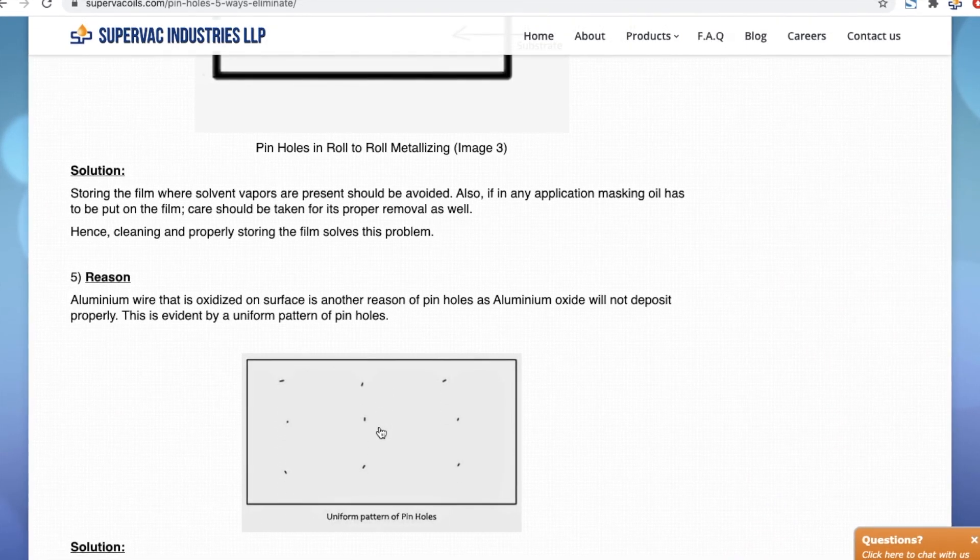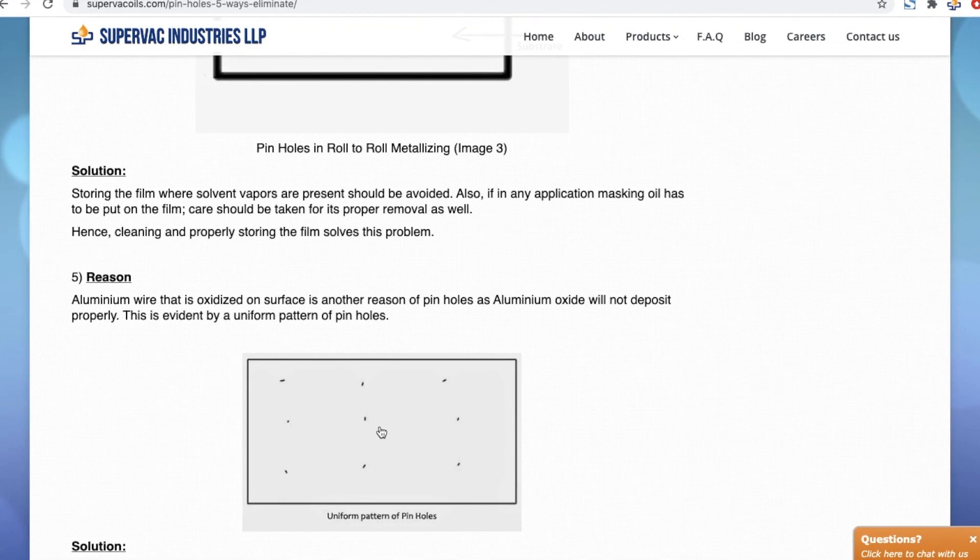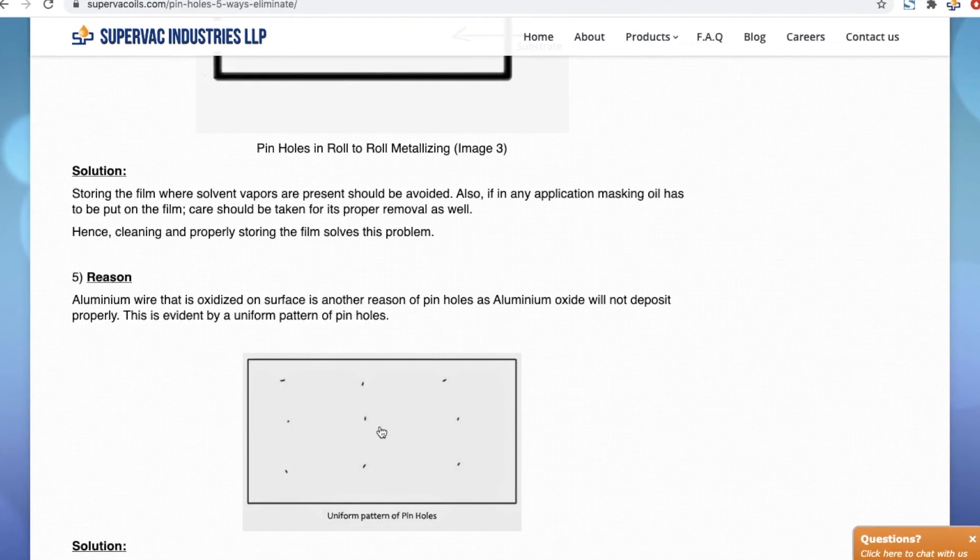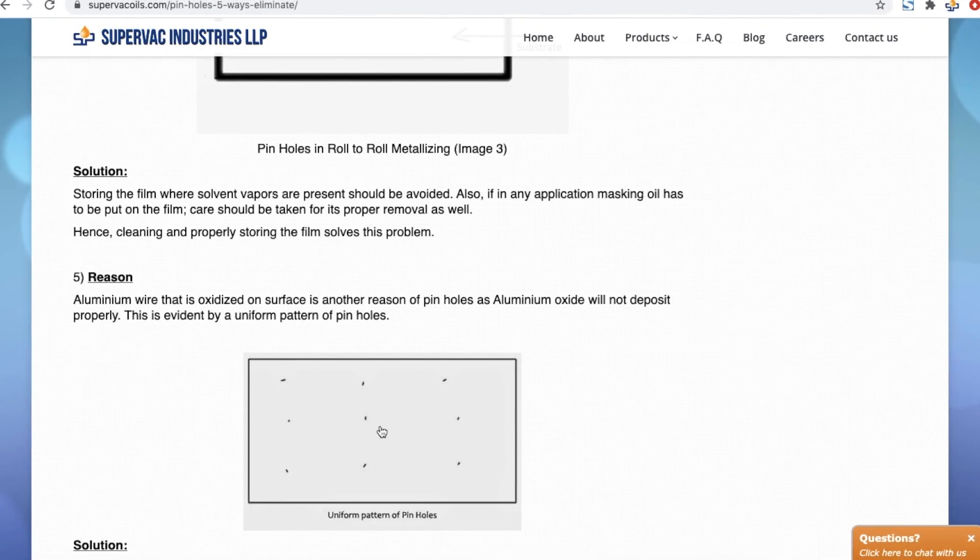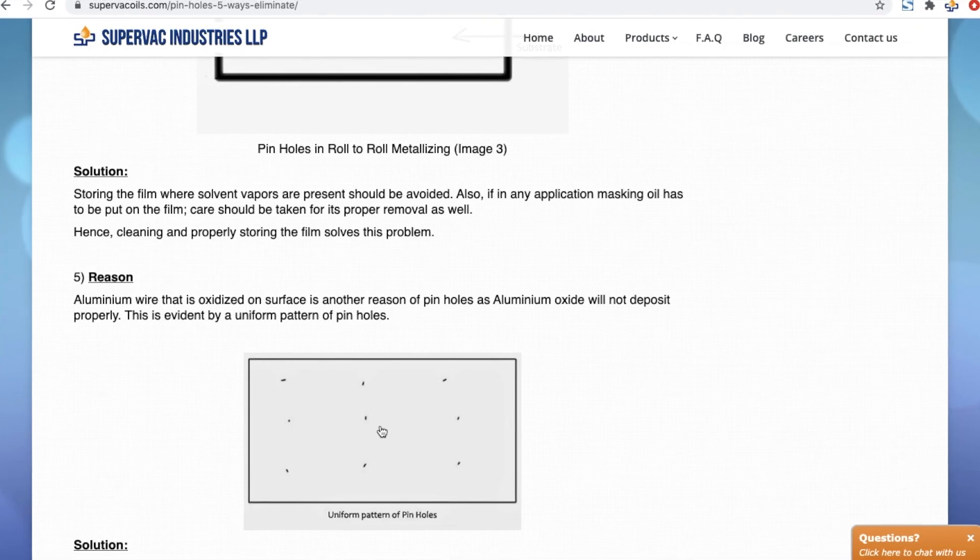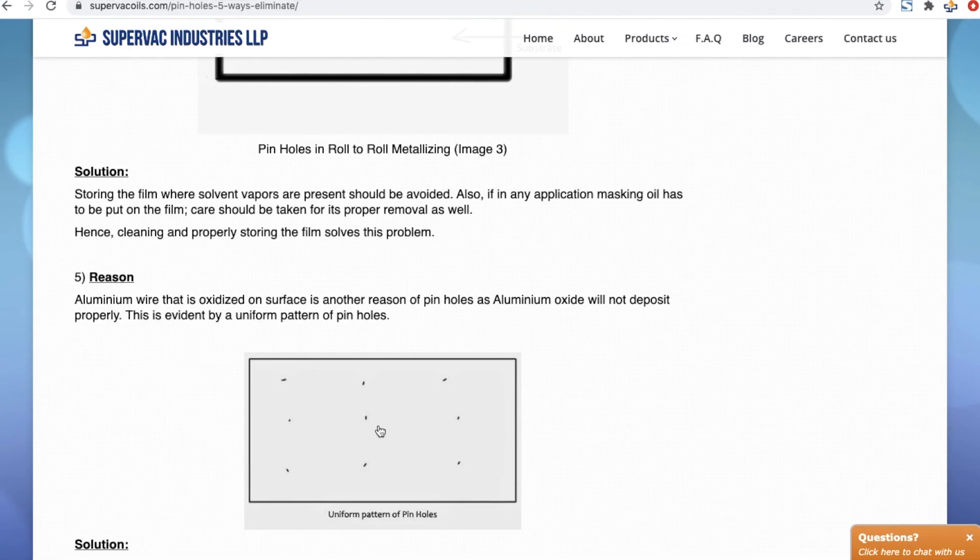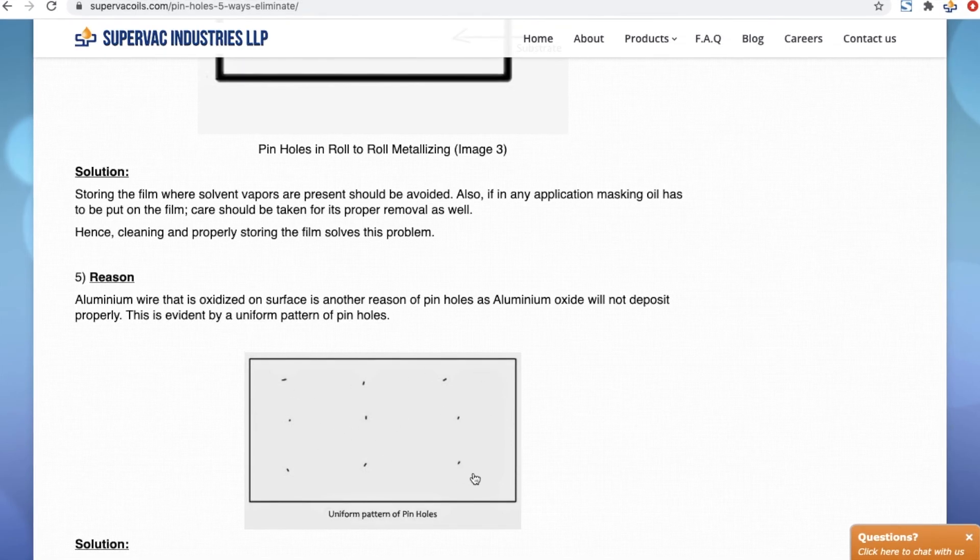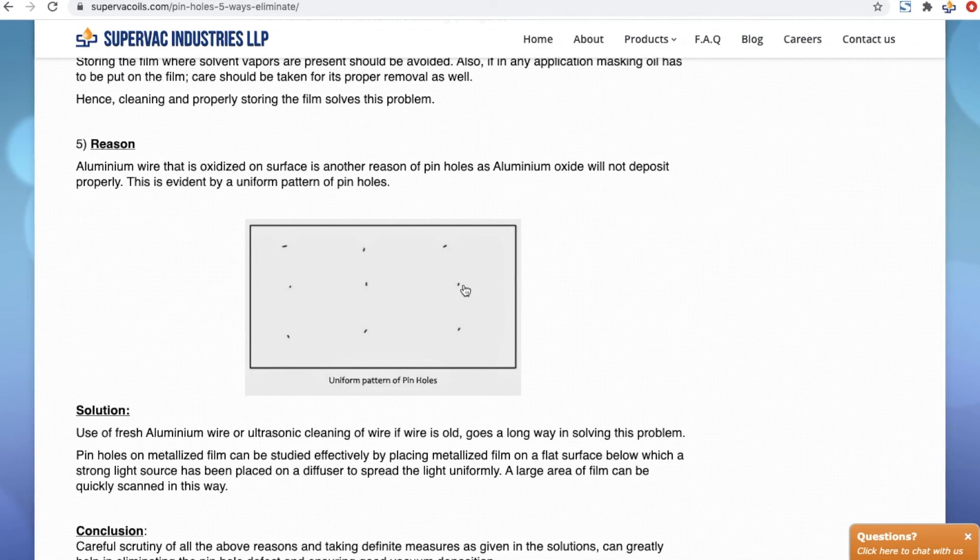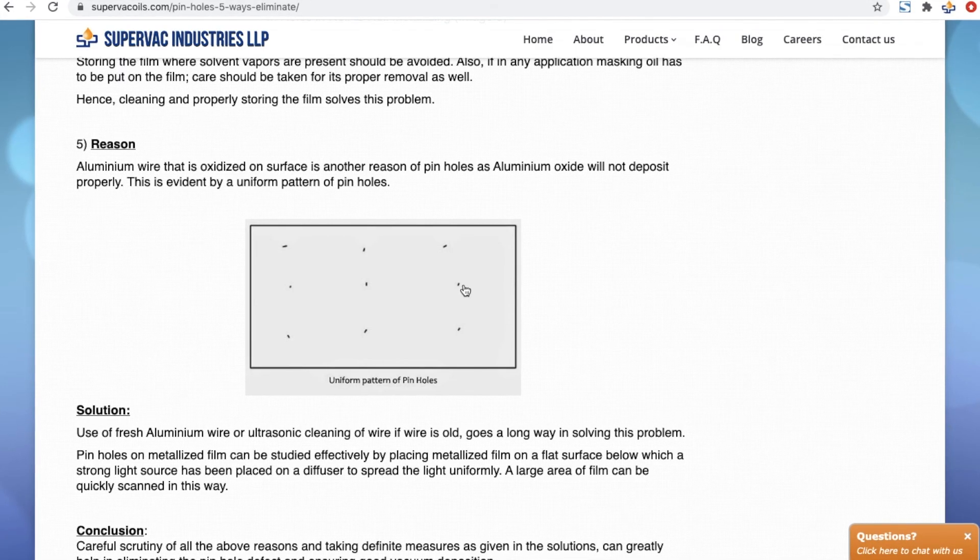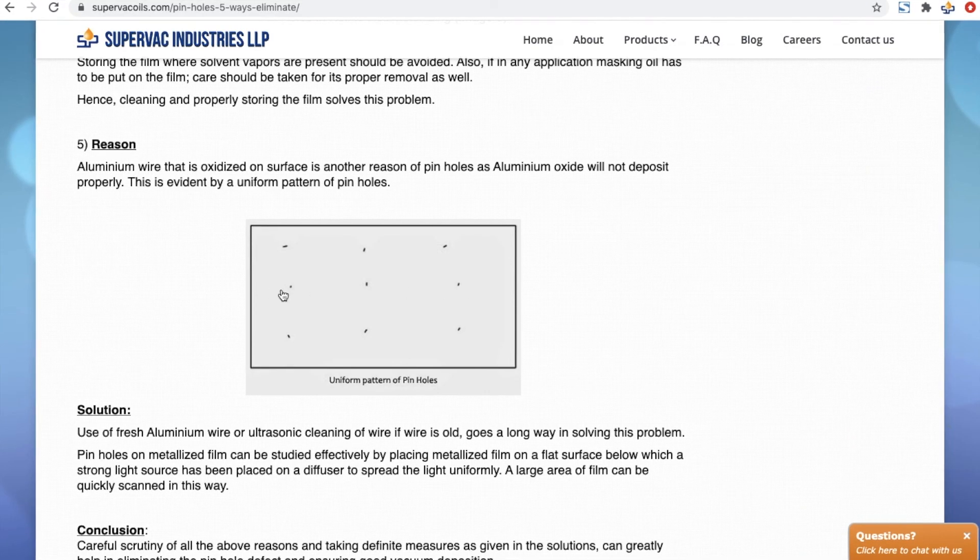Another thing that causes pinholes is the aluminum wire. Aluminum wire that has been oxidized excessively on the surface will cause pinholes because the substrate will receive vapors of aluminum and aluminum oxide, and aluminum oxide will not deposit in such cases. These are identified by a uniform pattern of pinholes. This gives away that this has been caused by aluminum wire. So as far as possible, we must use fresh aluminum wire, preferably the one that has been cleaned ultrasonically. So this problem will be solved by this.